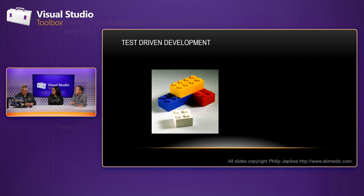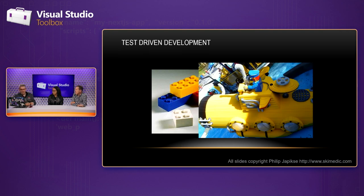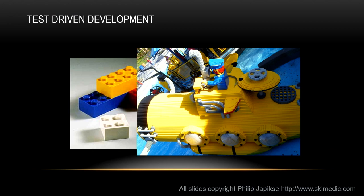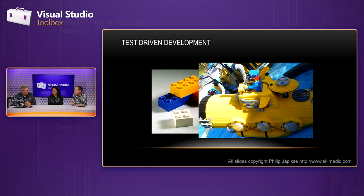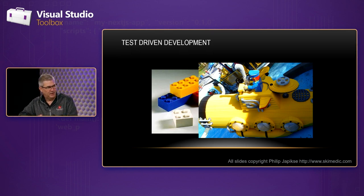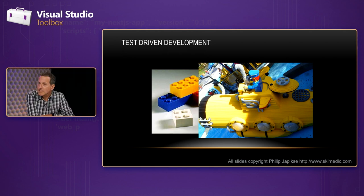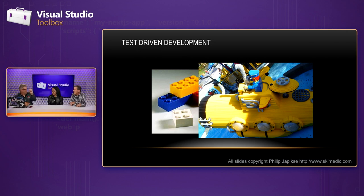So this is test-driven development. We're making sure all of the blocks work correctly. But we're not checking to make sure they work correctly together. So let's look at this Lego - this is from Legoland outside of Orlando. What's wrong with this picture? It's a submarine. I'm going to guess that the unit test for the periscope all passed, the unit test for the hatch all passed. But you can't use this particular periscope unless the hatch is open. So they didn't check the behavior of the periscope in relation to the submarine.